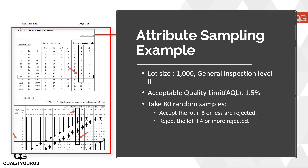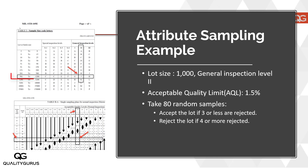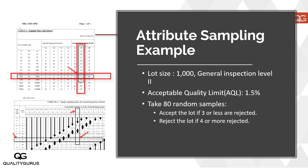We look at two tables. On the first table, there is a row for 500 to 1200. Since my lot size is 1000, it falls under that row. Looking at general inspection level 2, this gives me the letter J. With letter J, I move to the next table, look at J with an acceptable quality level of 1.5%, and get two numbers: 3 and 4. 3 is the acceptance number and 4 is the rejection number.